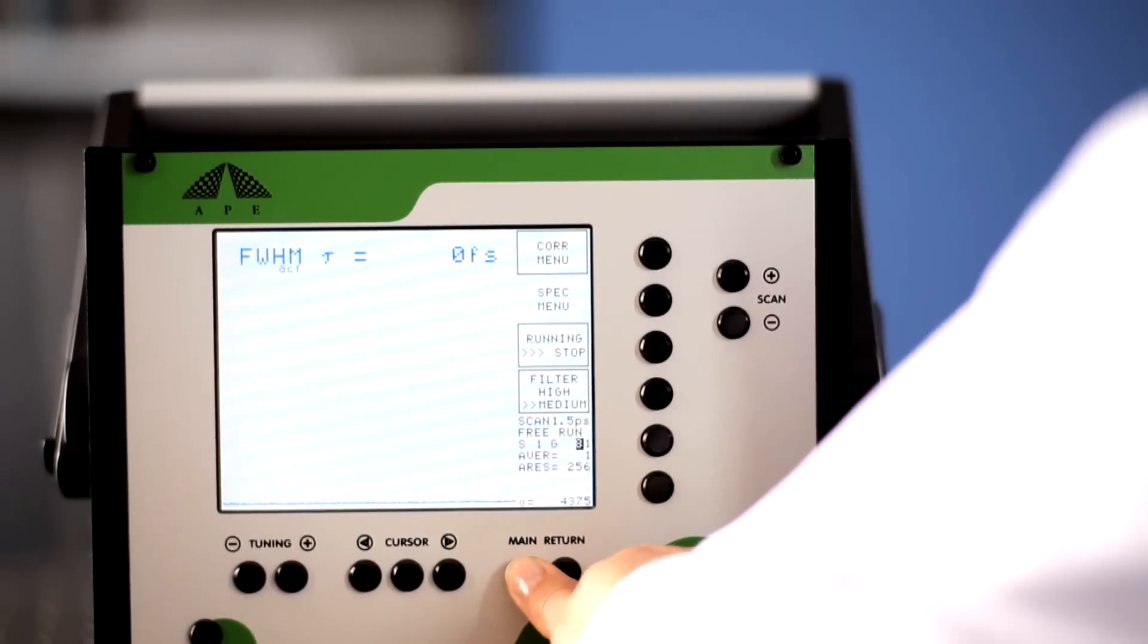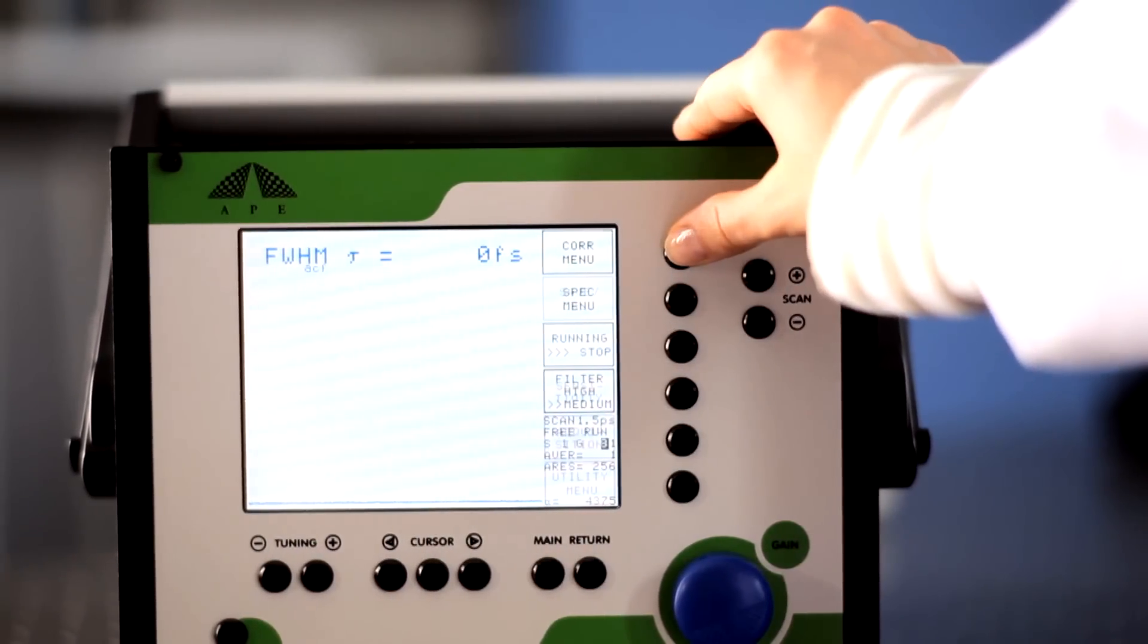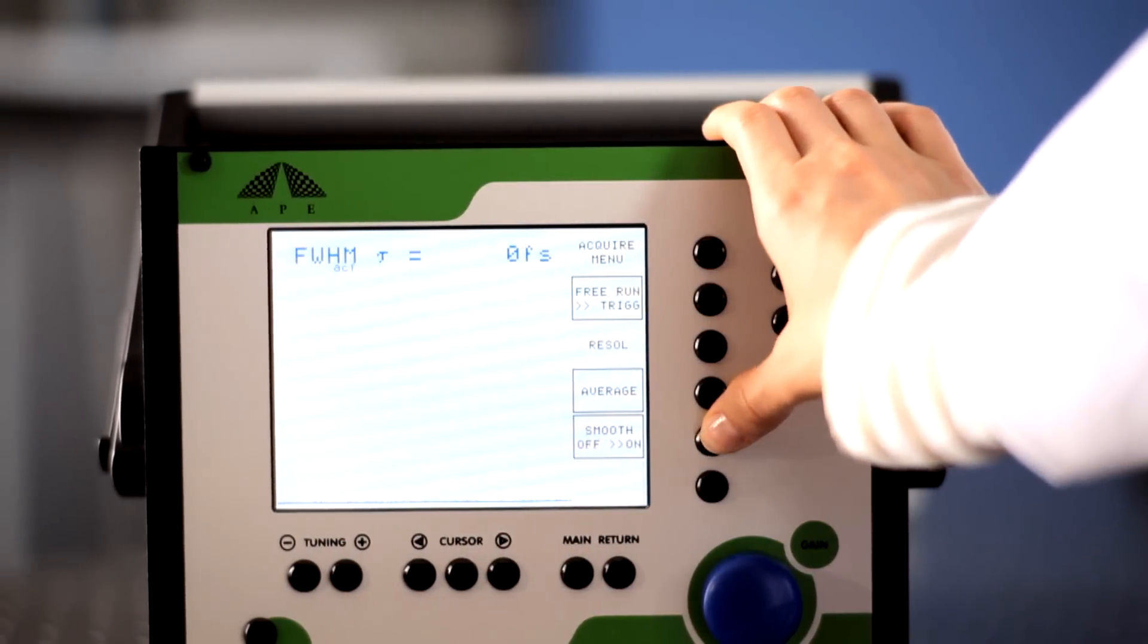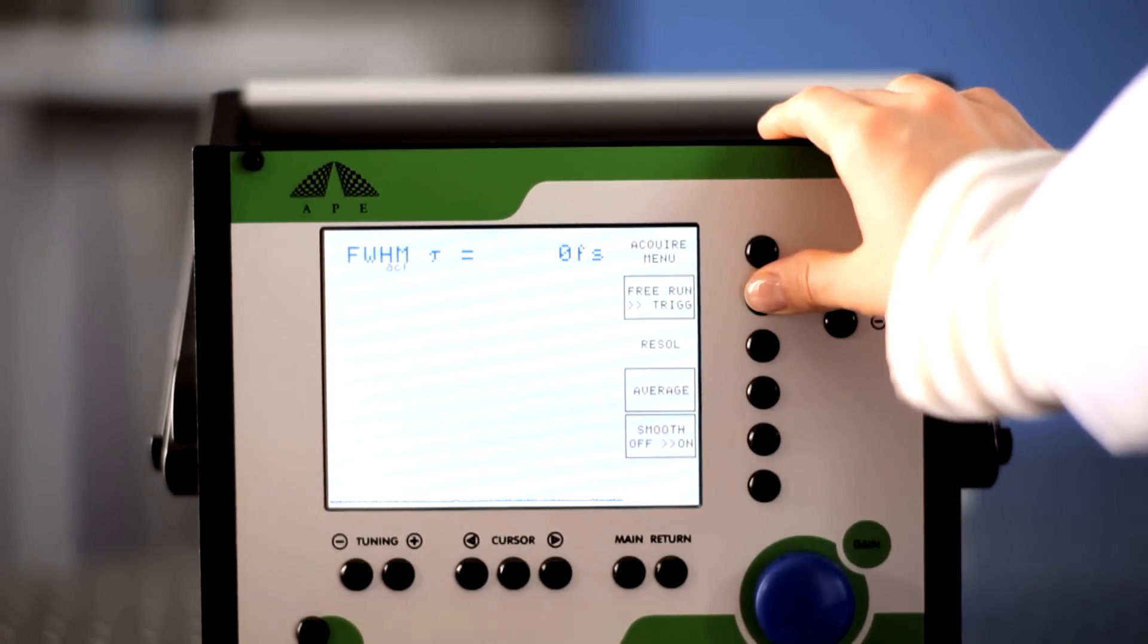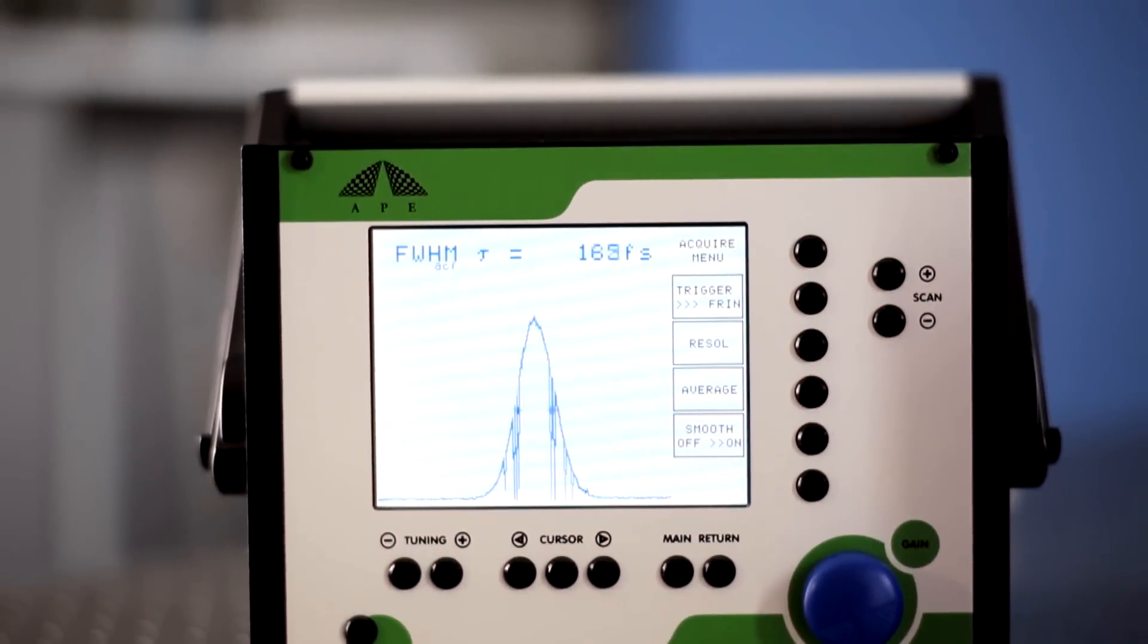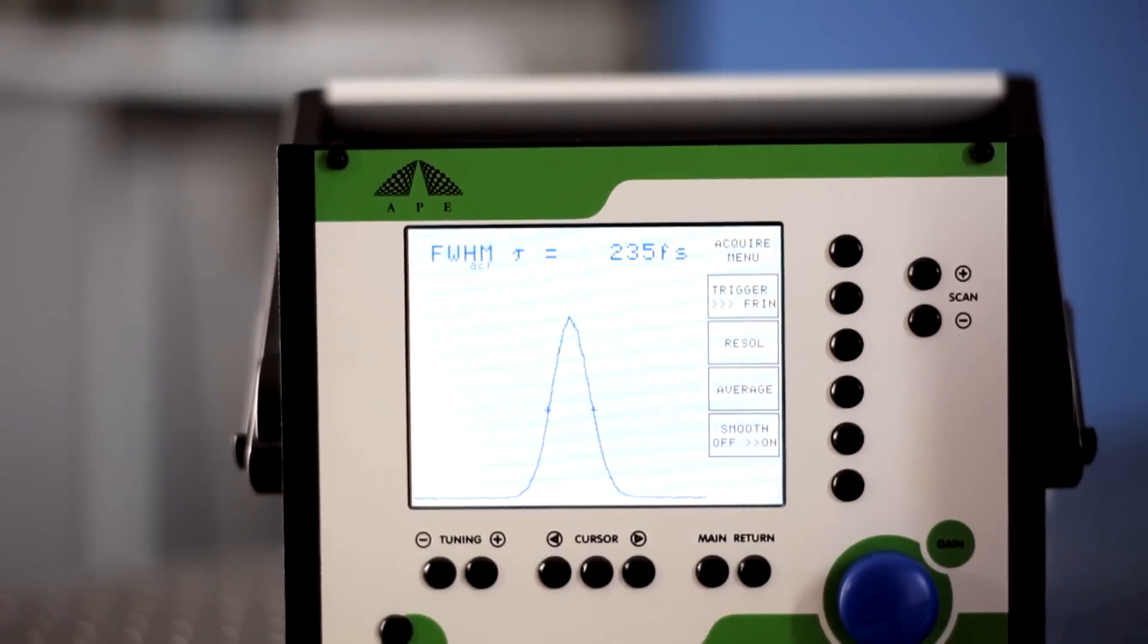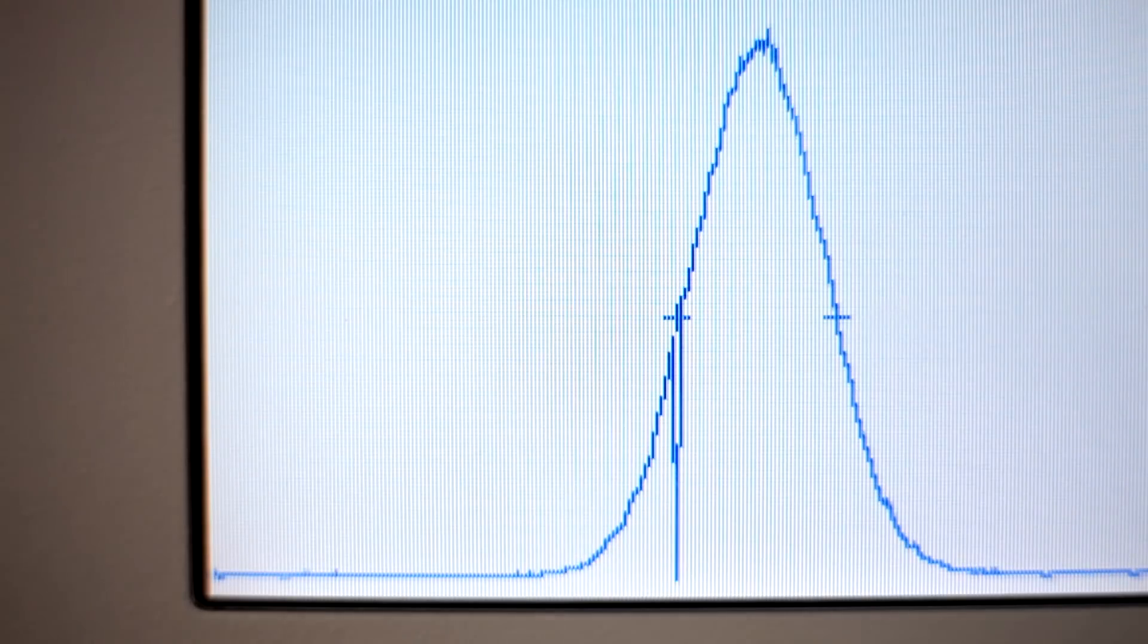Now go to your controller unit and select the main menu. Then select acquisition, and change the setting from free run mode to trigger mode. The display should confirm you're now in trigger mode, so you can be sure your measurements will be totally accurate.